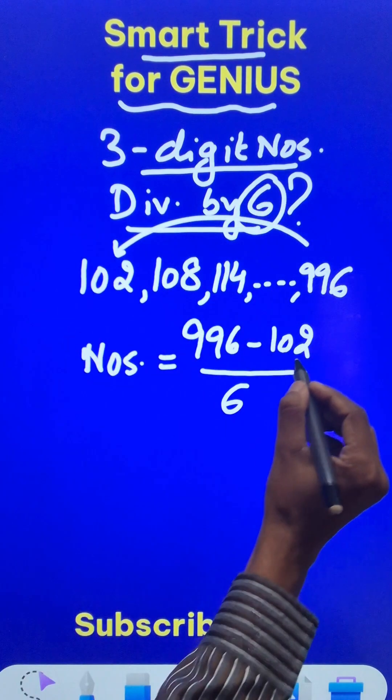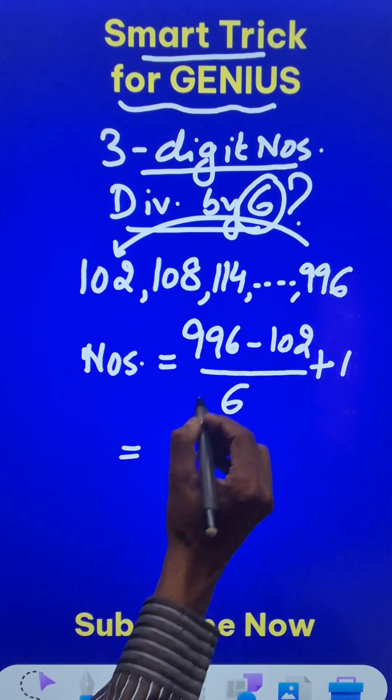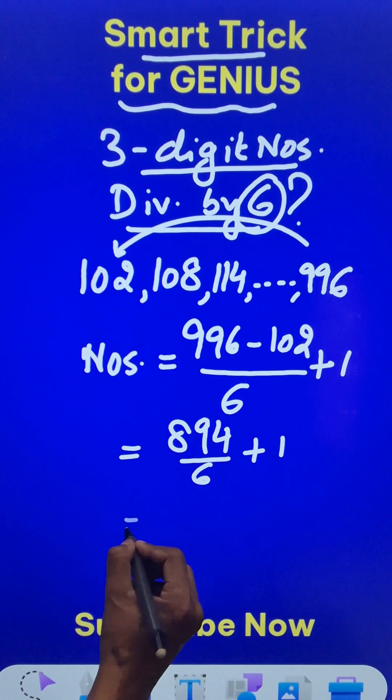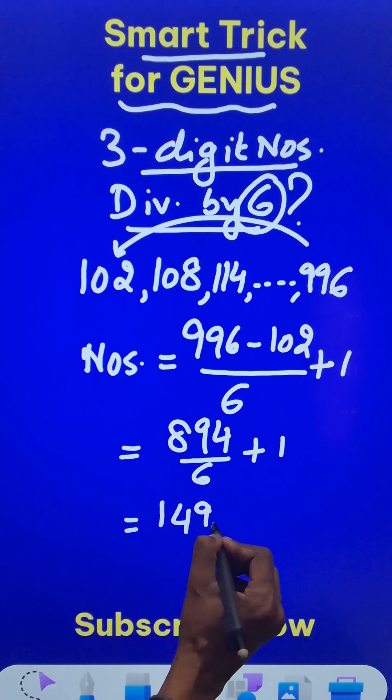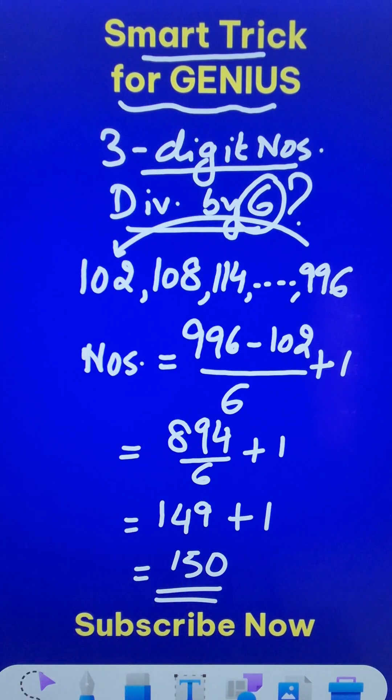Right? So divide by 6 and just add 1 to the result. So what do we get? 996 minus 102 is 894. Divided by 6 and add 1, you get 149 plus 1, and therefore 150. So 150 3-digit numbers are divisible by 6.